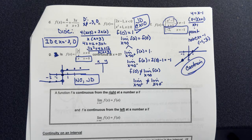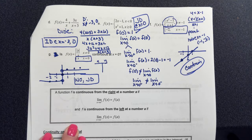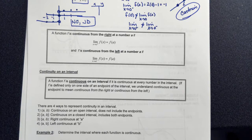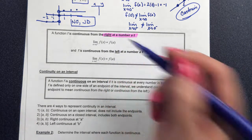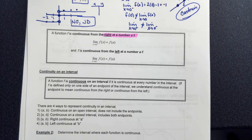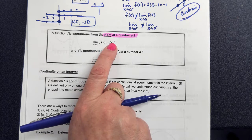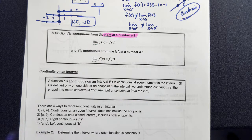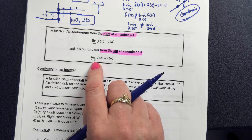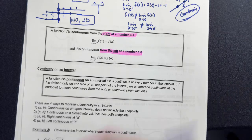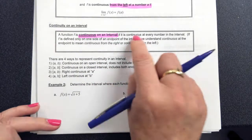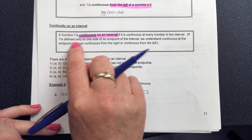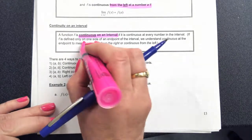Just like two-sided limits, we can also have one-sided continuity. A function is continuous from the right at a if the limit as x approaches a from the right equals the defined value. Similarly, it's continuous from the left if the limit from the left equals the defined value. For intervals of continuity, the function must be continuous at every number in the interval; at endpoints, we check one-sided continuity.